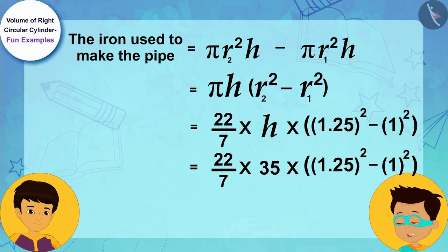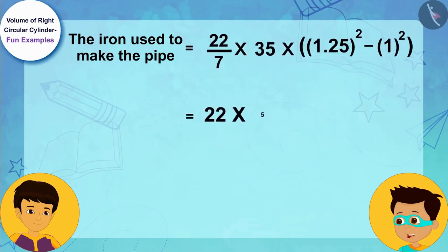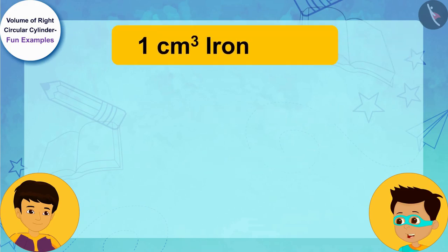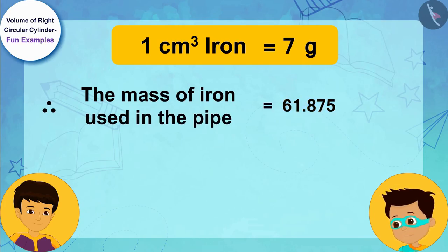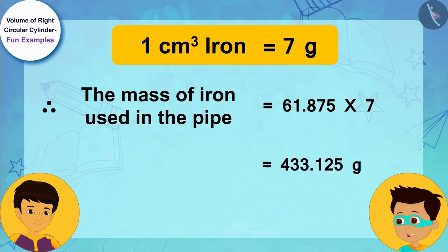Now, it's my turn. I will solve it quickly in this way. We know that 1 cm³ of iron is equal to 7 grams. Therefore, the mass of iron used in the pipe is 61.875 times 7, that is, 433.125 grams.